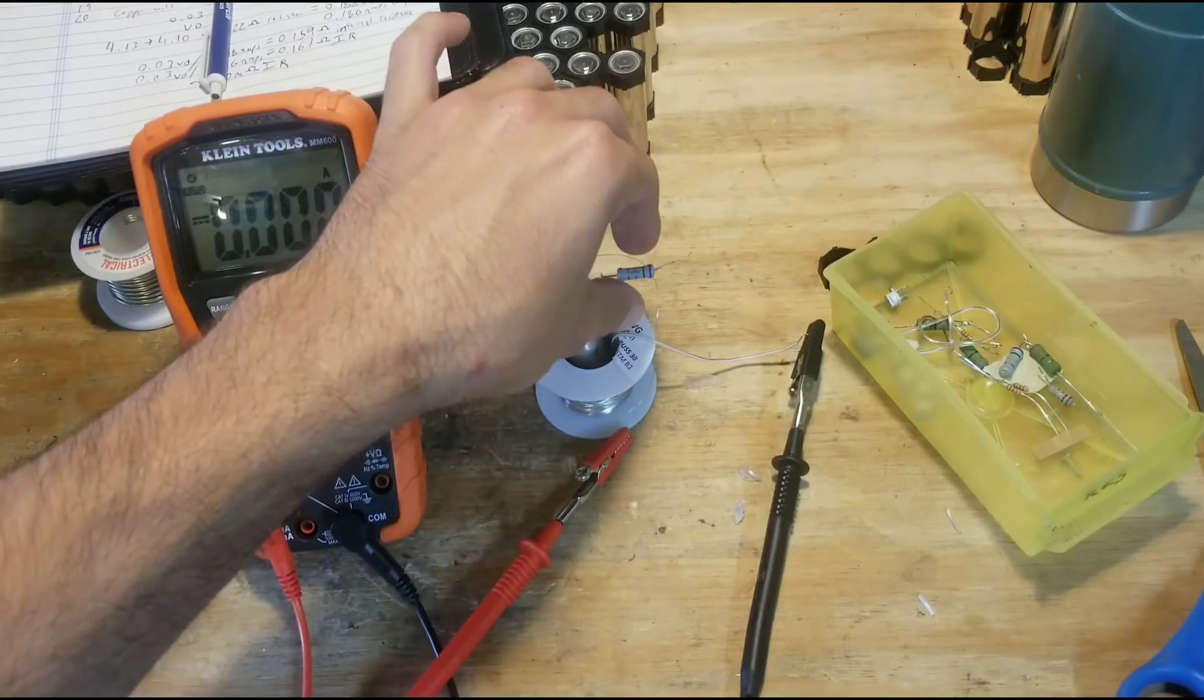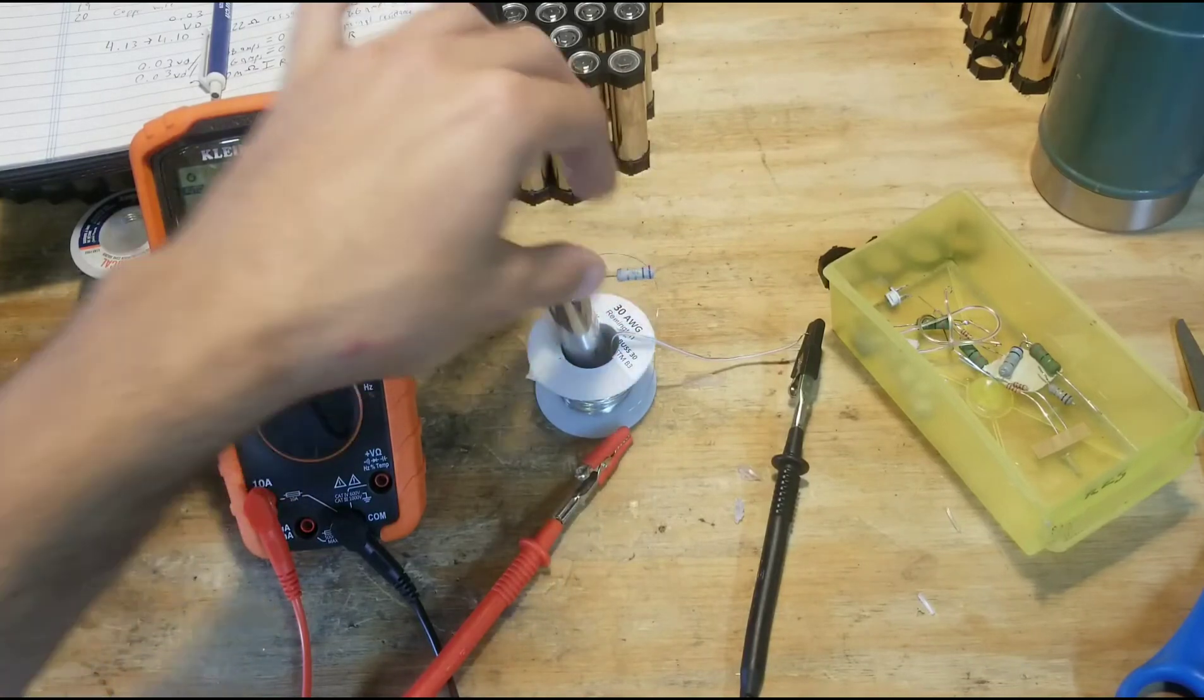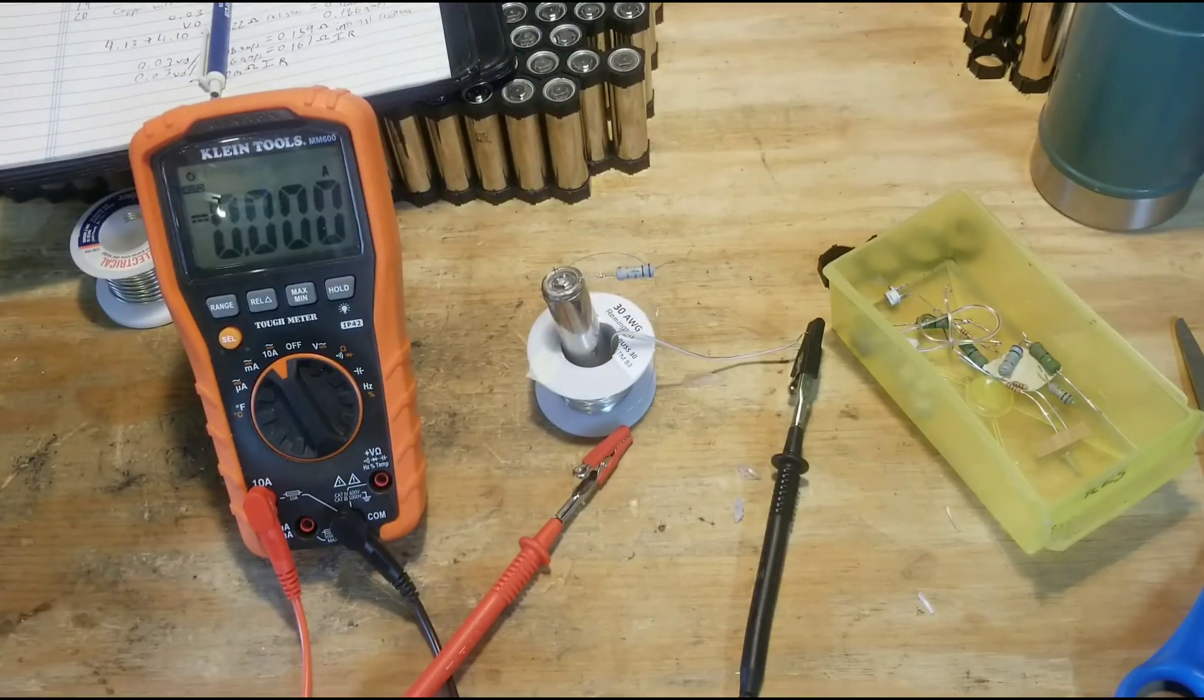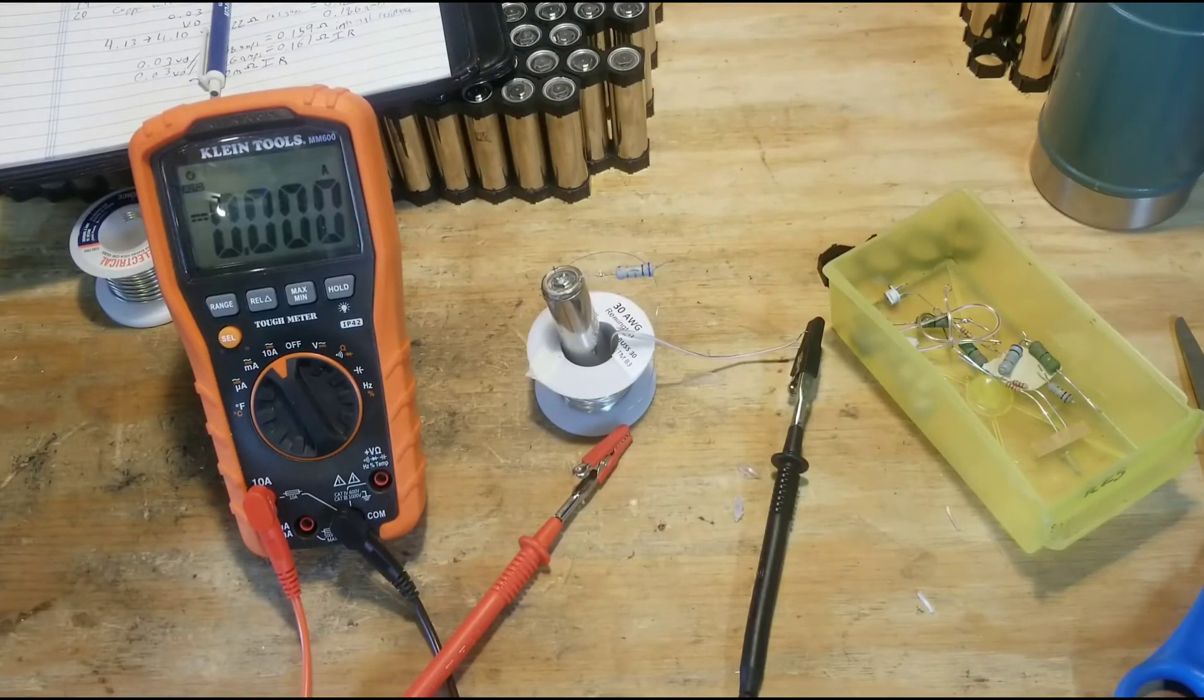So I've put a 0.8 ohm resistor here. And so as we know volts equals current times resistance, which is Ohm's law.